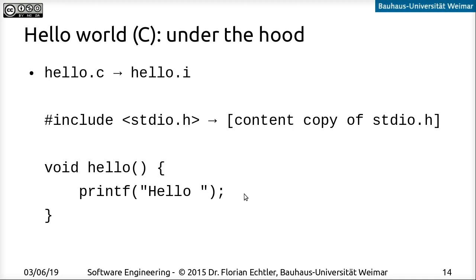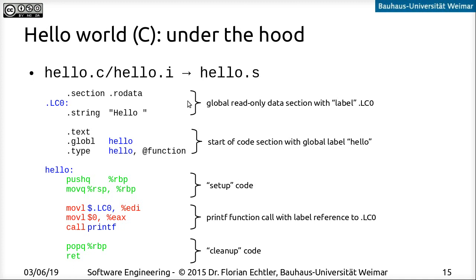The next step is the assembly stage. When we run the preprocessed C file through the actual compiler, we get a .s file containing assembler code. There's a read-only data section containing the fixed string used in our print statement, and then the text segment — which contains the function itself. There is a global label definition of type function, followed by the actual label with the function's code. The green parts are boilerplate setup and cleanup code.